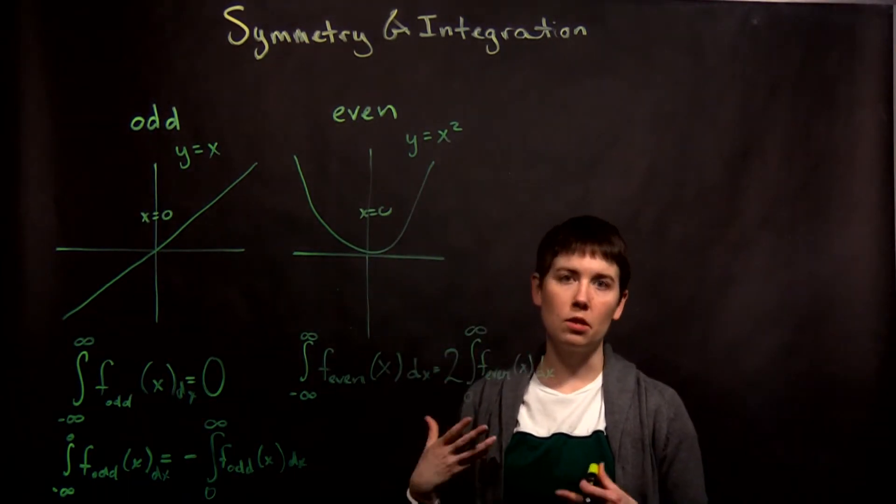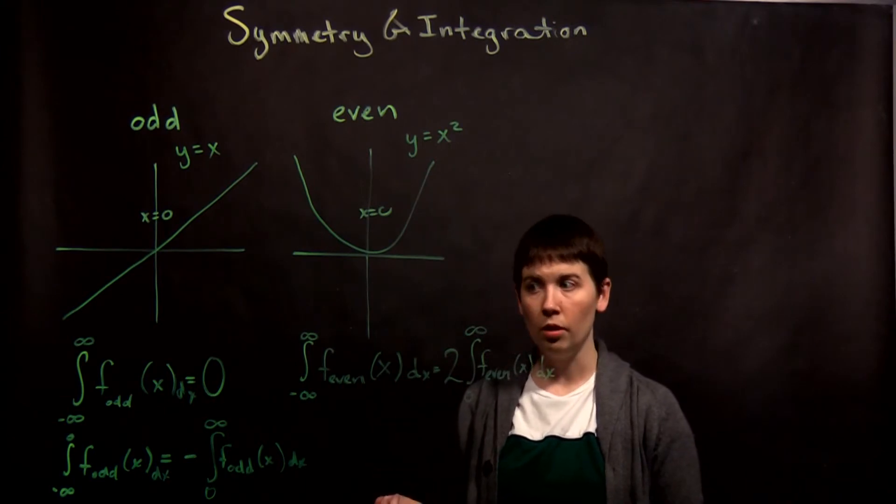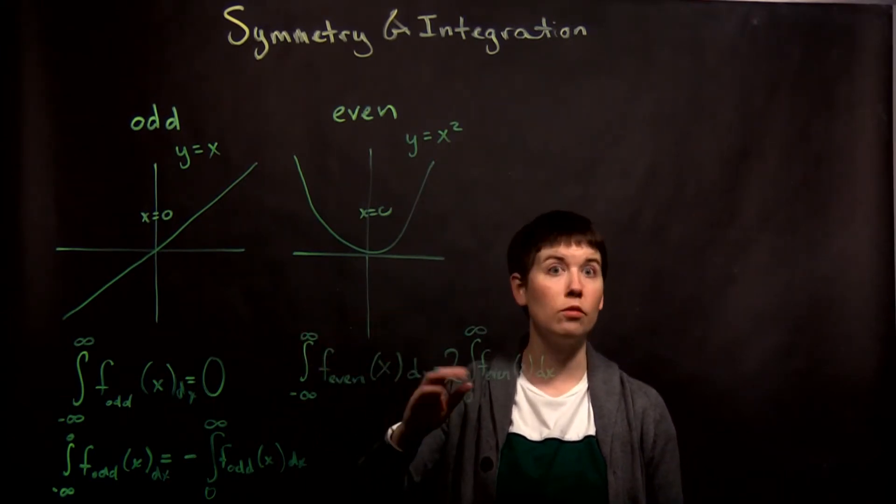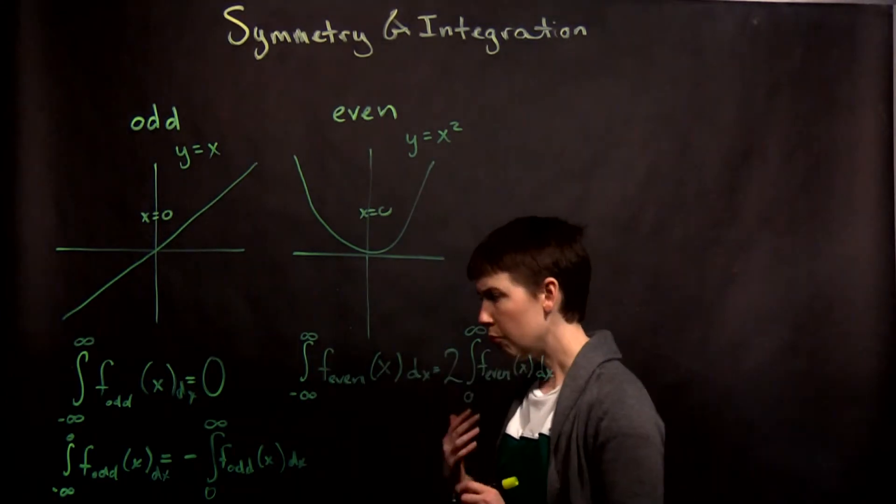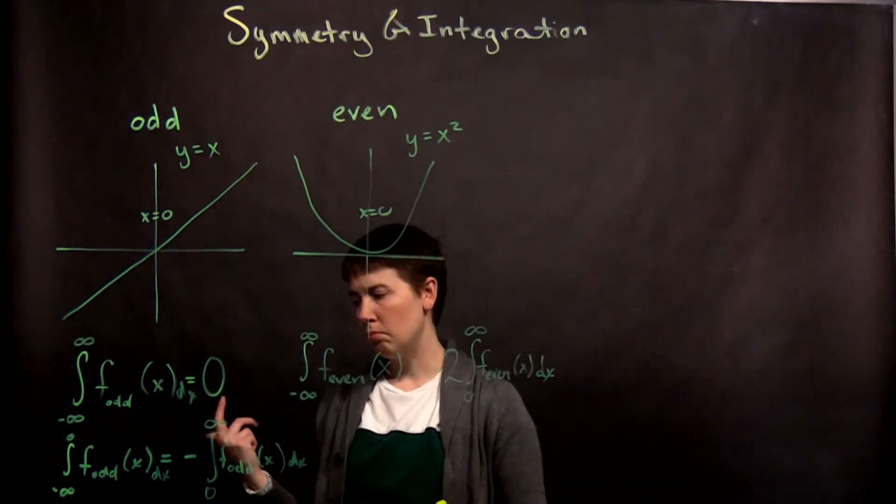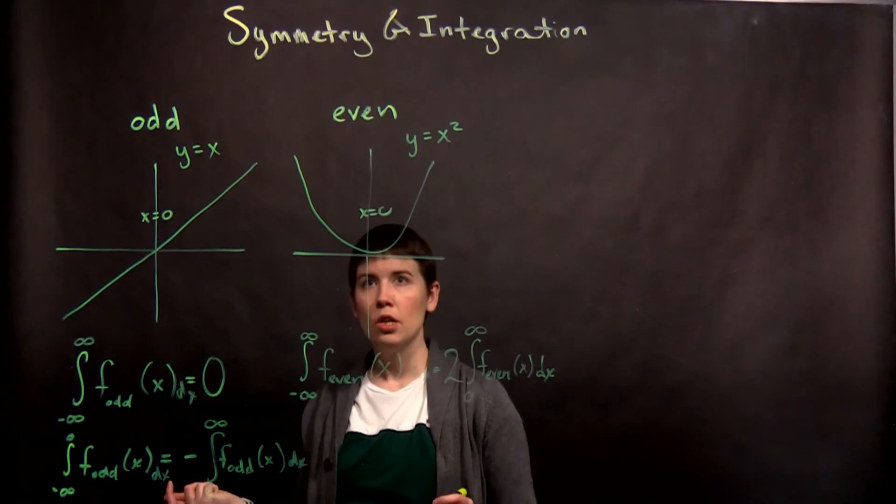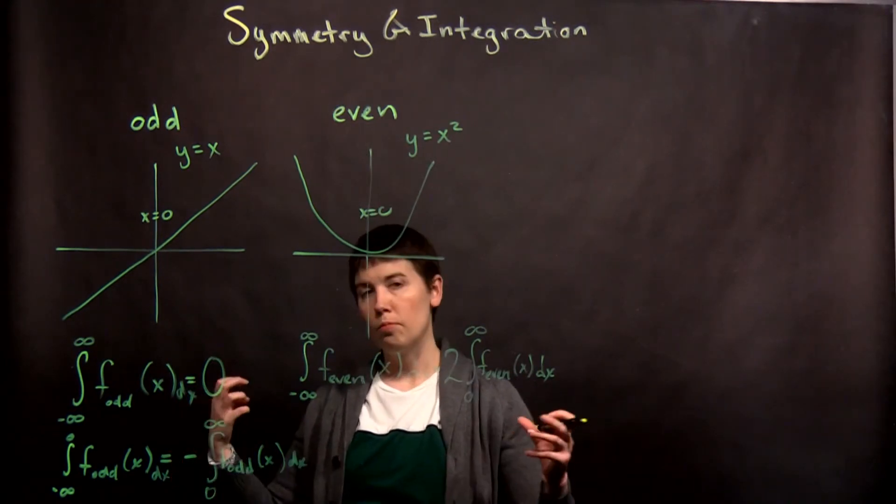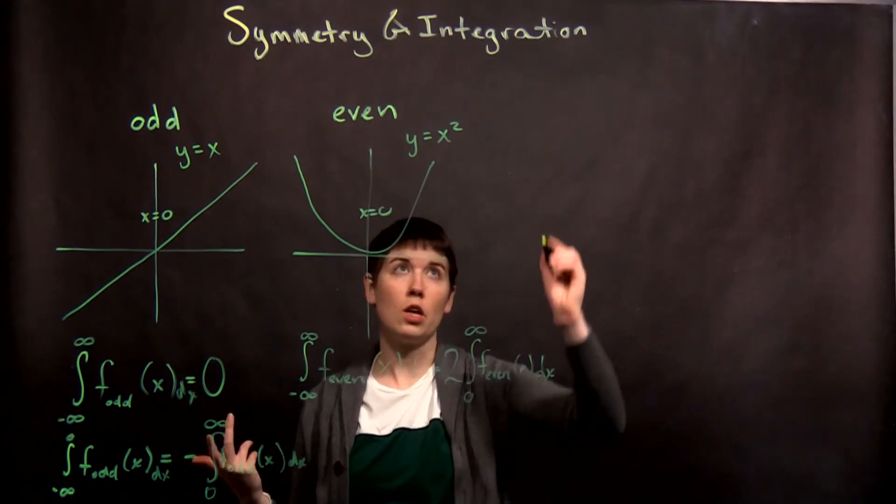So that's sometimes helpful because there might be a time that you look in your integration table and you don't actually have the definition for negative infinity to infinity. You have it from zero to infinity. So one other thing to recognize is that we can start talking about the symmetry if we're multiplying functions together.